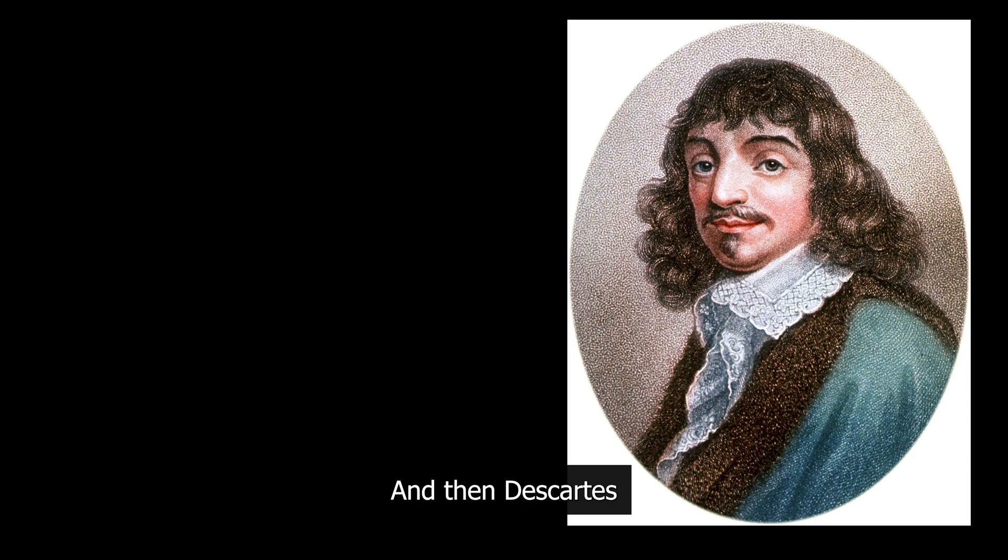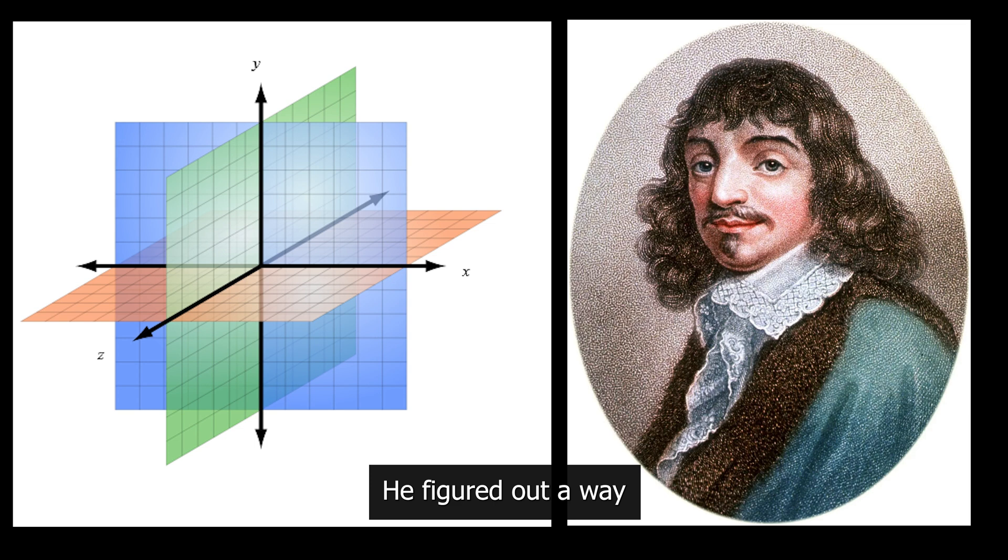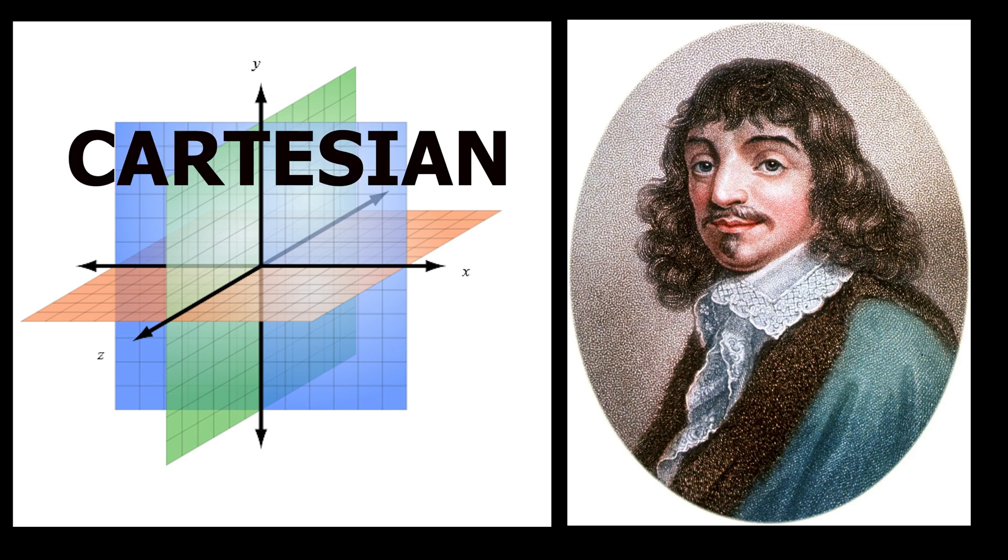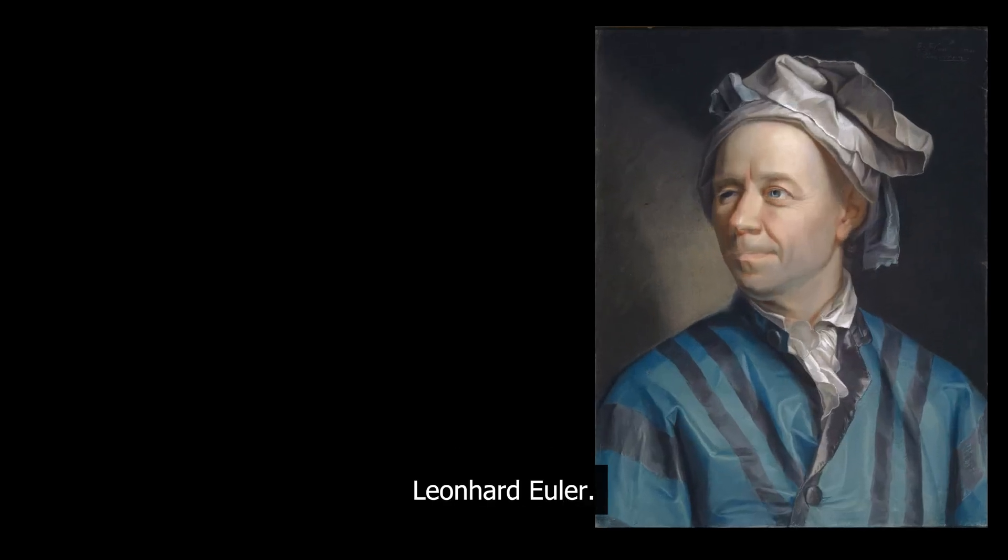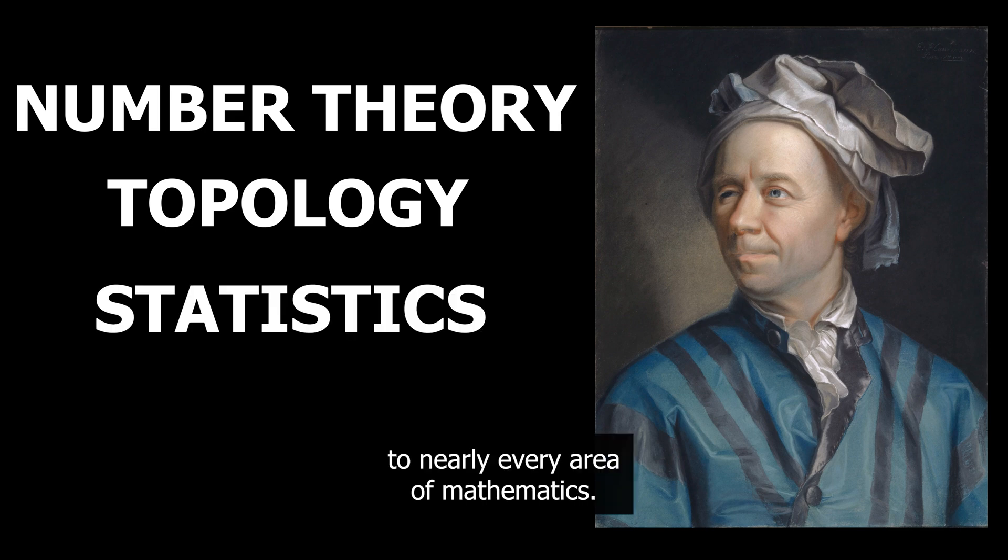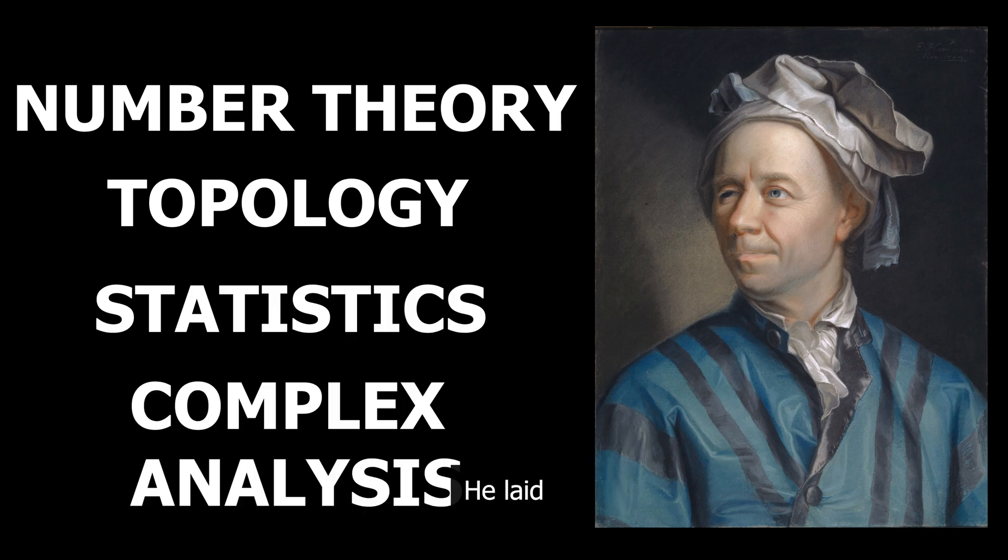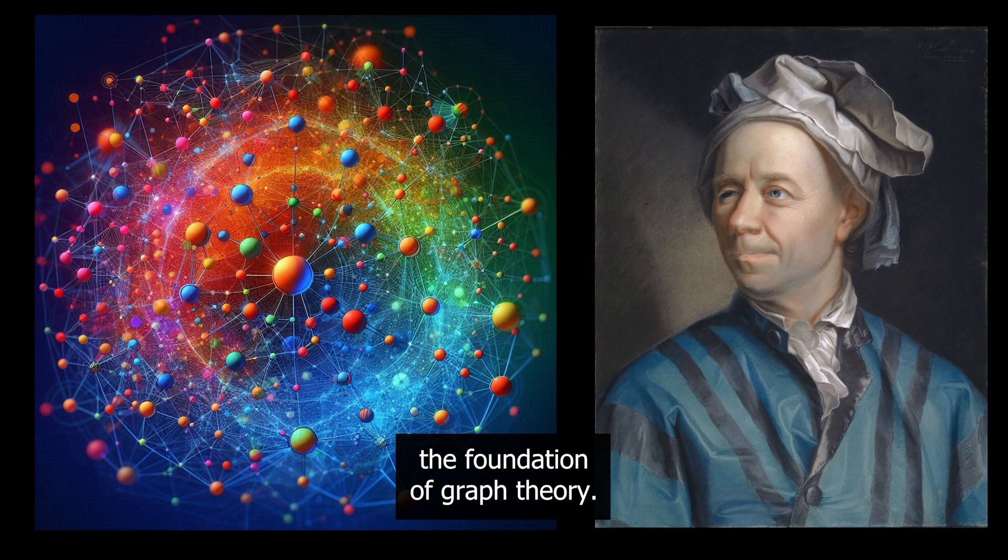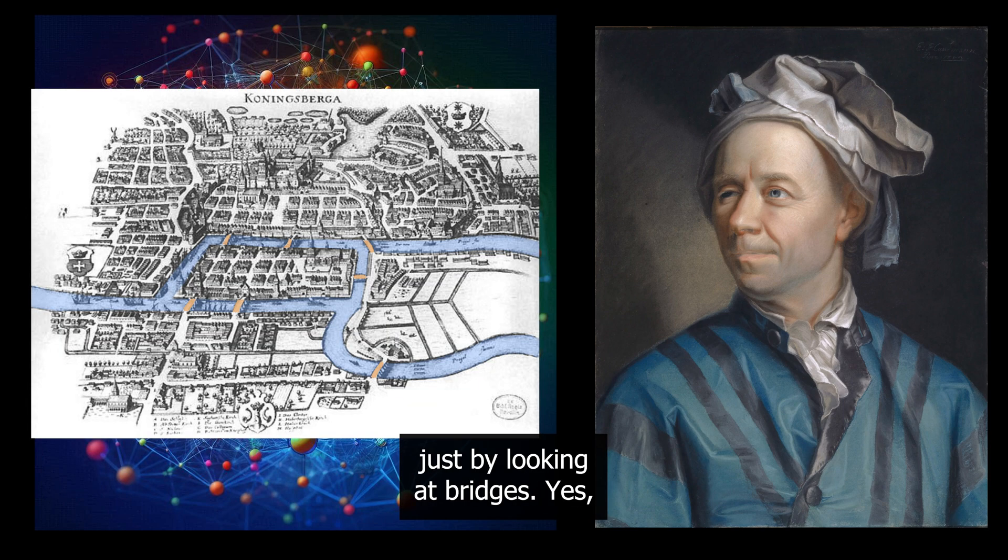And then came Descartes. He figured out a way to visualize equations on graphs known as the Cartesian coordinate system. Then came another genius, Leonhard Euler. He brought his unique genius to nearly every area of mathematics. He laid the foundation of graph theory, and he did that just by looking at bridges. Yes.